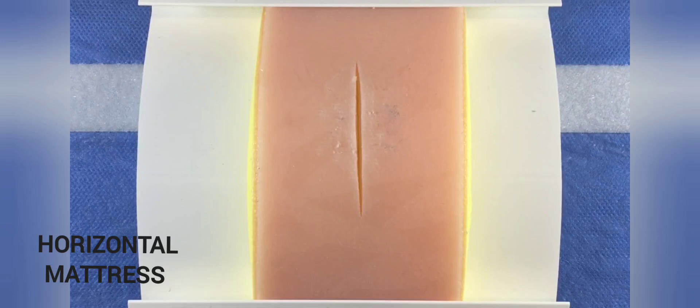A horizontal mattress is where two stitches are placed in the same horizontal plane next to one another. This is ideal for everting the wound edges to facilitate optimal healing.